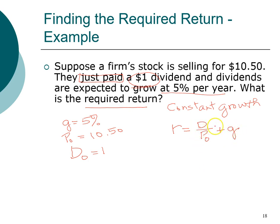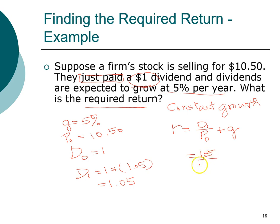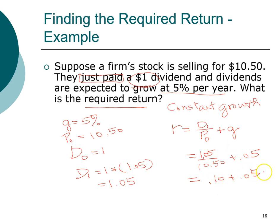In order to use the constant growth model — required return = (D1 / P0) + g — we need the dividend in year one. We have D0 = $1.00, so D1 = $1.00 × 1.05 = $1.05. With P0 = $10.50 and g = 5%, the required return = ($1.05 / $10.50) + 0.05 = 0.10 + 0.05 = 0.15. The dividend yield is 10% and the capital gains yield is 5%, so the total required return for this firm is 15%.